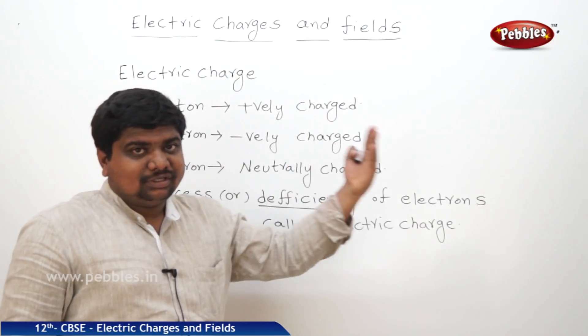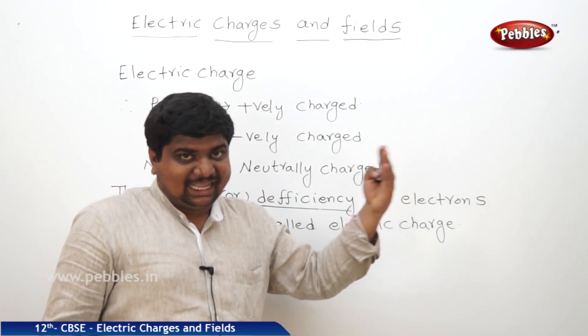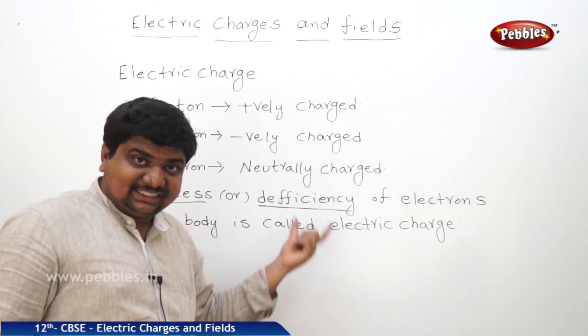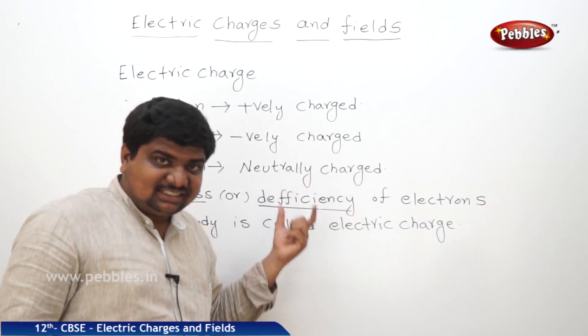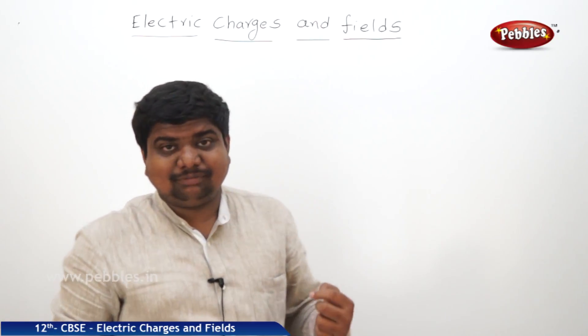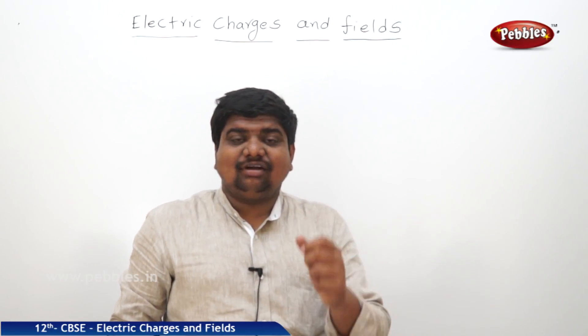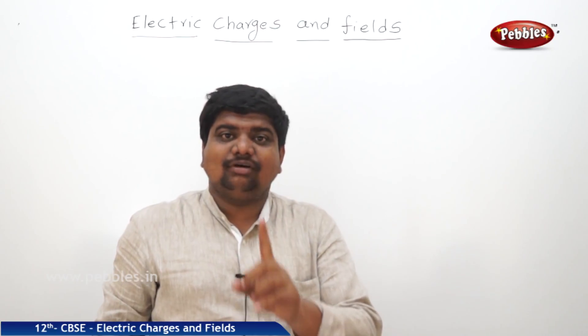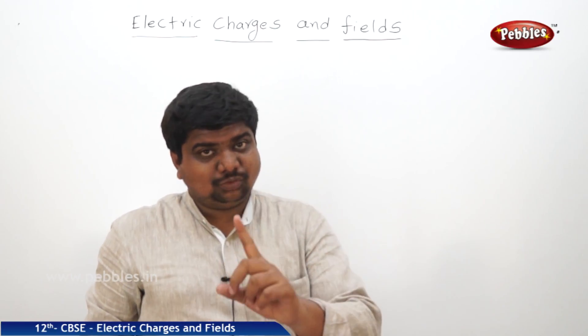We are going to see some examples of electrification and charging. As we already discussed, excess or deficiency of electrons is called electric charge. This charge is of two types: positively charged and negatively charged.